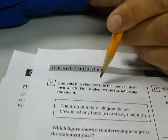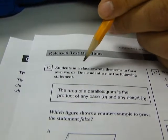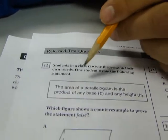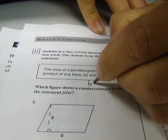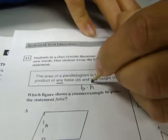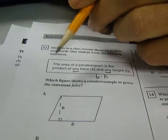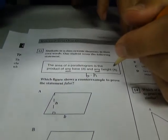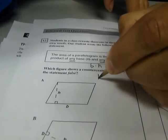Students in a class rewrote theorems in their own words. One student wrote the following statement. The area of a parallelogram is the product of any base and any height. So basically they're saying B times H. But the key words here is any and any. We're going to find that it's not always true. So we're going to look for a counterexample to prove the statement is false. So sure, a parallelogram is base times height.